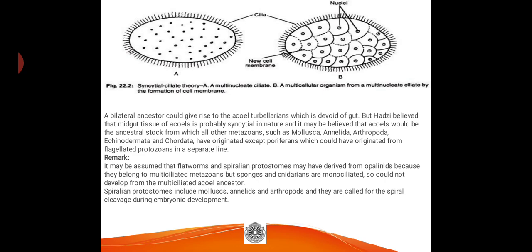The diagram shows the syncytial origin of metazoans. A ciliate is shown with many cilia — hair-like locomotive projections on the outer wall — and inside the cytoplasm there are many nuclei, showing the multi-nucleate condition. During the course of evolution, each nuclear bit gradually develops a definite cell boundary or plasma membrane around itself, giving rise to the multicellular condition.